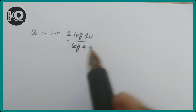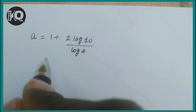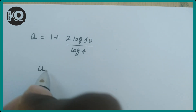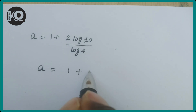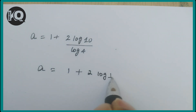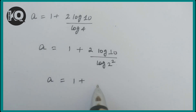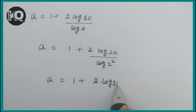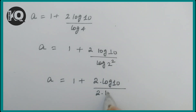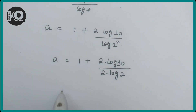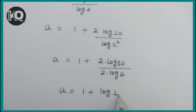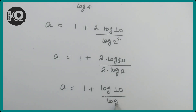Now rewrite log(4) as log(2²), so the denominator becomes 2·log(2). This gives a = 1 + 2·log(10) / (2·log(2)). The 2s cancel, leaving a = 1 + log(10)/log(2).